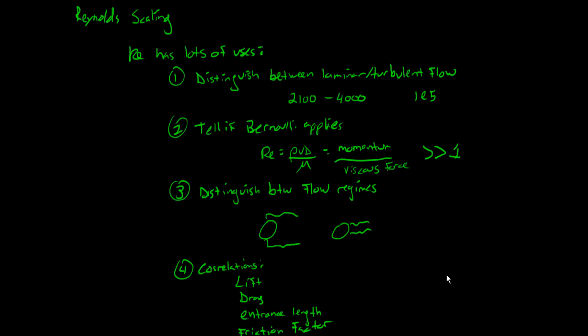Okay, as a last little touch on the Reynolds number, let's look at how we can use it. Things we've seen before: first off, you can use it to distinguish between laminar and turbulent flow. So in a pipe, less than 2100 was laminar, more than 4000 was turbulent. In external flow it was more like 10 to the 5.